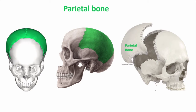Assalamu alaikum. Welcome all to Easy Human Anatomy channel. In this video I discuss the parietal bone. They are two in number and they form most of the vault of the skull. This is an individual parietal bone.